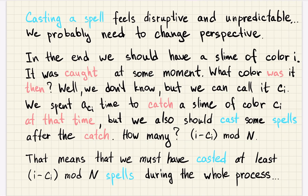Casting a spell is kind of weird — it changes a lot. We get some colors and lose some colors. It's hard to understand what actual changes will happen and what we should do next. So we probably need to change perspective and look at that differently.